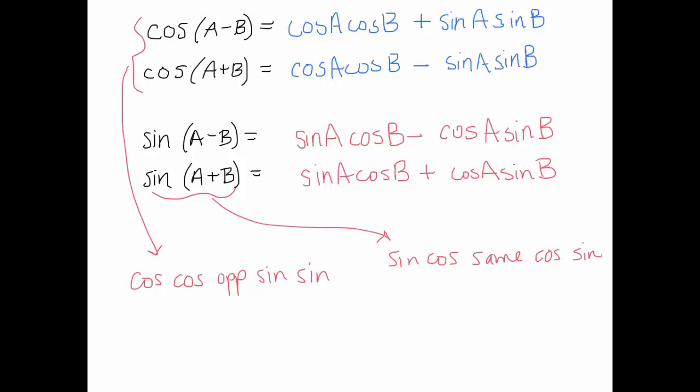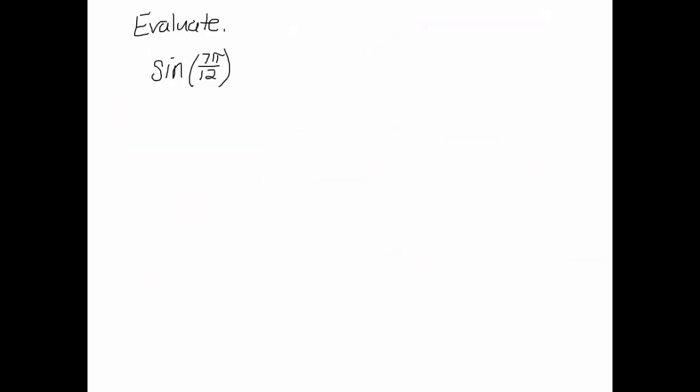So now let's try using these. What does this have to do with what we just learned? This is sine of an angle, but notice that angle, 7 pi over 12, isn't something that we're used to dealing with. We're used to dealing with things like pi over 2, pi over 3, pi over 4, pi over 6. Let's give this a try.